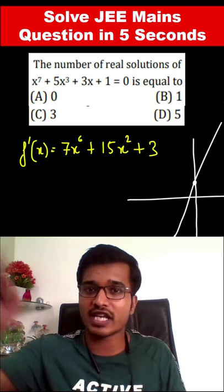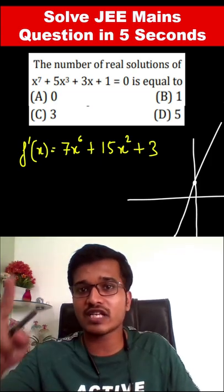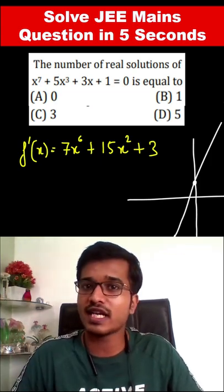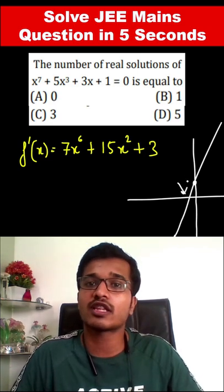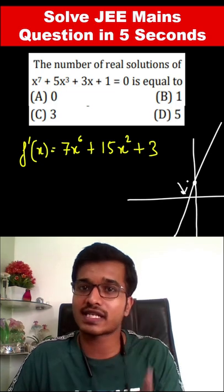If we plot this as a graph, then this is an increasing function. This will never get lost and cut x-axis. This means the number of solutions is only 1, because it has only 1.